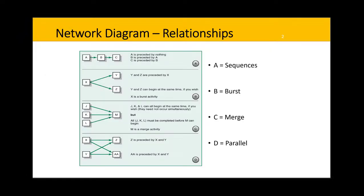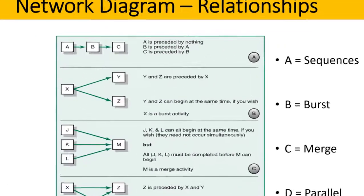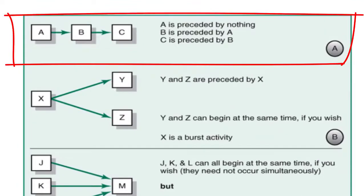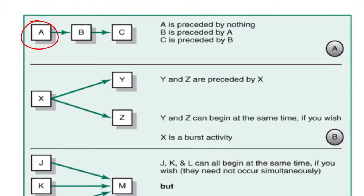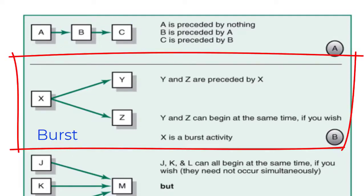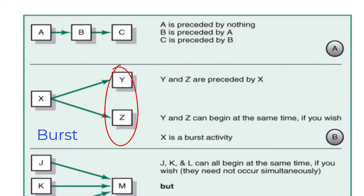Here we can see different types of relationships. A represents sequence tasks: A is preceded by nothing, B is preceded by A, and C is preceded by B. B represents a burst. Y and Z are preceded by X. Y and Z can begin at the same time if you wish, and X is a burst activity, with Y and Z bursting from X.